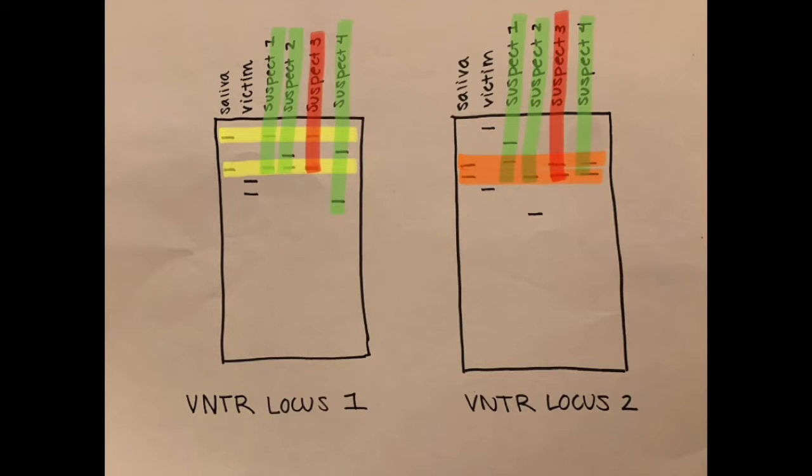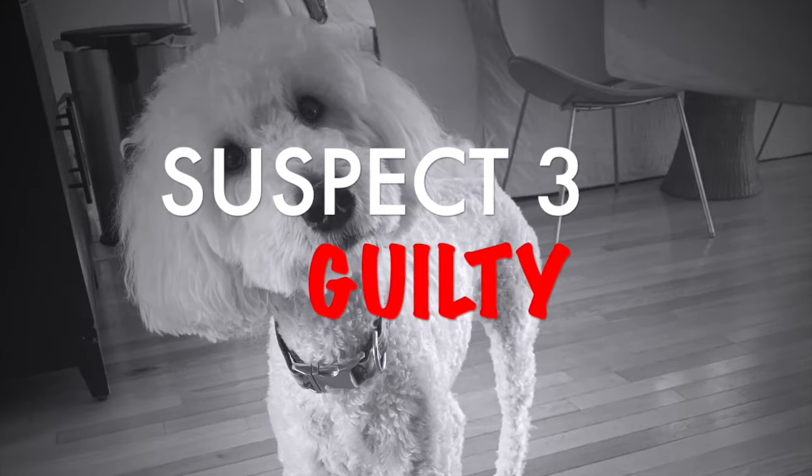Now, looking at both loci together, you can see that Suspect 4 does not match at loci 1, so Abby Normal did not do it. Suspect 1 only matched at loci 1, but not at 2. So, Billie Eyelash did not do it. Suspect 2 only had one band to match at each loci, but you need both to match. Roxy did not do it. Suspect 3 matched perfectly at both loci. Indiana Bones is guilty.